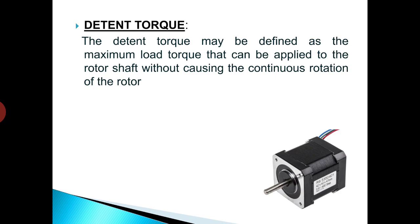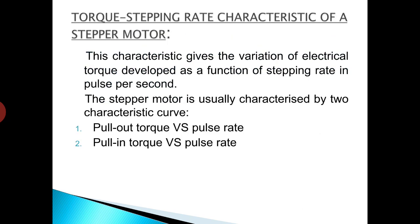Detent torque: the rotor of a permanent magnet motor and the hybrid stepper motor has the tendency of aligning itself with the stator poles even in the absence of stator excitation, due to the rotor's magnetic behavior, and develops a torque to restrain the rotor from rotation. The detent torque is the measure of this tendency and may be defined as the maximum load torque that can be applied to the rotor shaft without causing continuous rotation of the rotor.